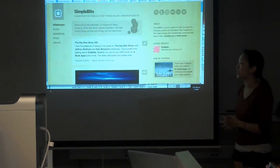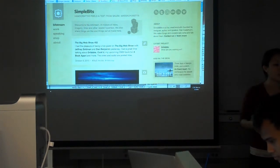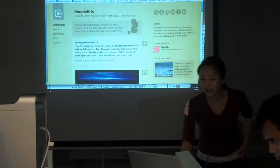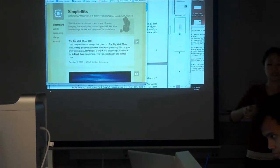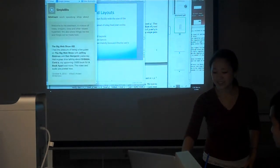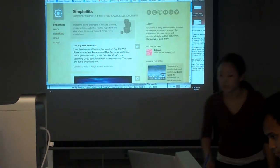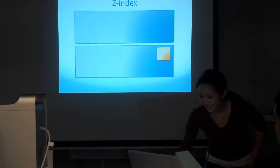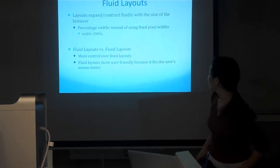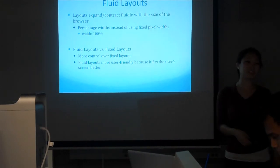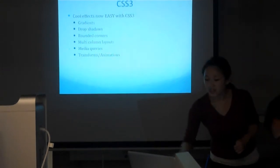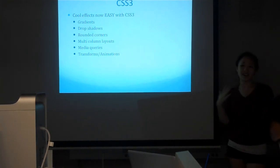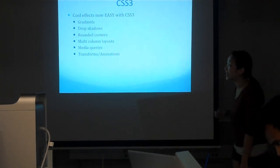Media queries are a new thing with CSS3. In your CSS, you can query what size the browser is and apply different styles. For example, this right sidebar disappears after about 600 pixels — you can write a media query for 600 pixels and set that sidebar to display none. You can visit simplebits.com to play with it. So there are pros and cons to fluid versus fixed layouts, depending on how much control you want over what your user sees. Now we're going to go a little bit into CSS3, which is the new trending thing in web design. You can achieve really cool effects with CSS3 and it's really easy.